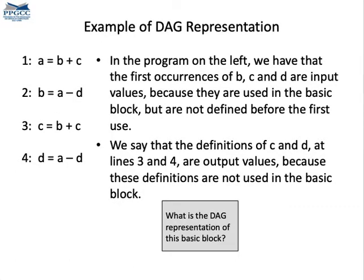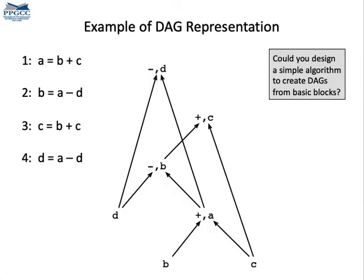As an example, take a look into this program on the left. The program is formed by four instructions. What they do is not really important. We will care only about the relations between the instructions. Let's see how to represent the program using a DAG. So here it is, the directed acyclic graph that represents this program. Can you try to figure out how we produce this DAG out of that program?